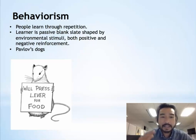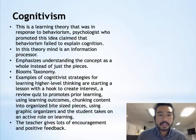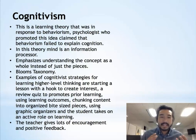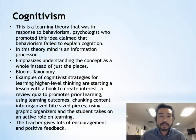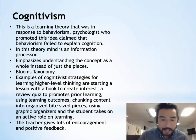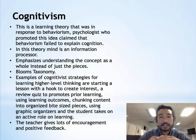I'm going to move on now to cognitivism, which is a little bit more complex, but I think they are connected. Cognitivism is a theory that was developed in response to behaviorism. A lot of psychologists didn't get on board with the idea that human beings are just like a rat or animal. They wanted to promote the idea that we are more complex and needed to explain cognition itself. In this theory, the mind is an information processor, and it emphasizes the concept as a whole instead of just the pieces — really trying to understand the whole idea and concept.